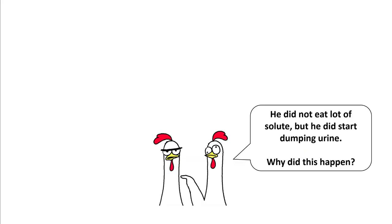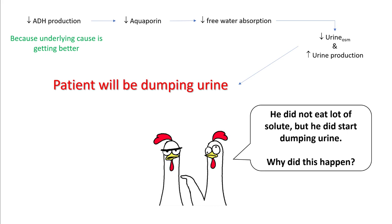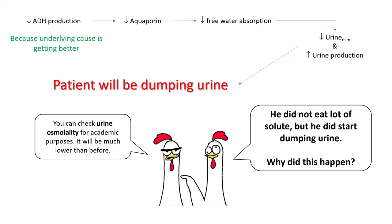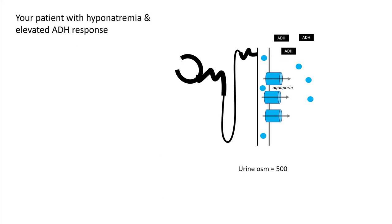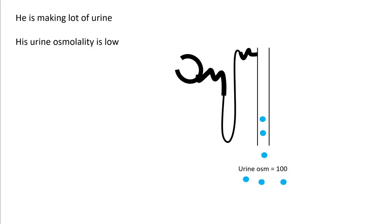Let's assume the patient did not eat a lot of solute but did start dumping urine. Why did this happen? This usually happens because the underlying etiology for hyponatremia has gotten better, so ADH production has dropped, resulting in decreased aquaporin channels in the distal convoluted tubules, which leads to less free water absorption. More water is being lost in the urine, so urine production increases and urine osmolality decreases. Rapid correction is usually seen in patients with hypovolemic hyponatremia or patients with temporary SIADH — for example, drug-related SIADH — and as the underlying pathology gets corrected, ADH production decreases, free water is lost in the urine, urine output increases, and urine osmolality decreases.